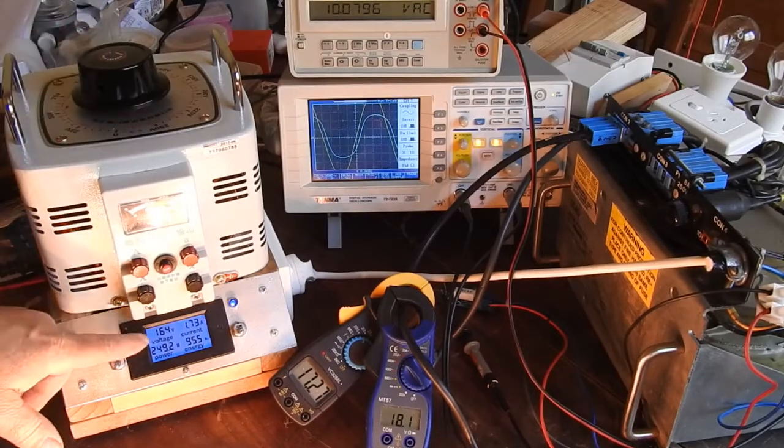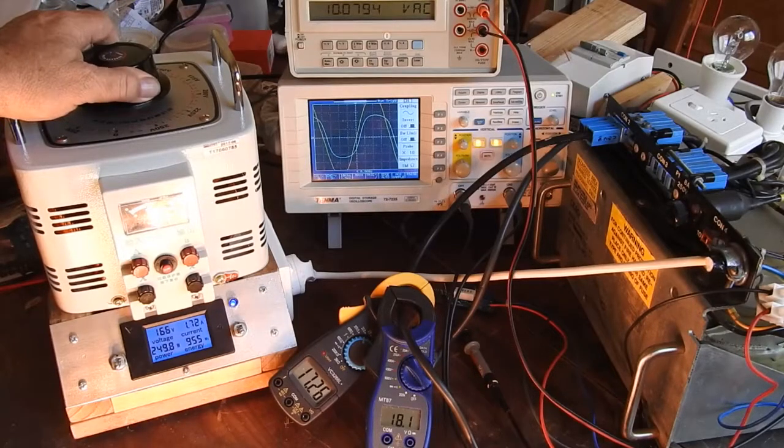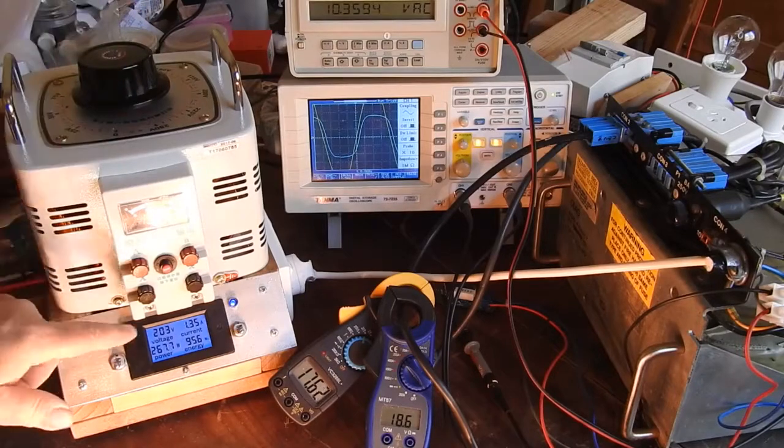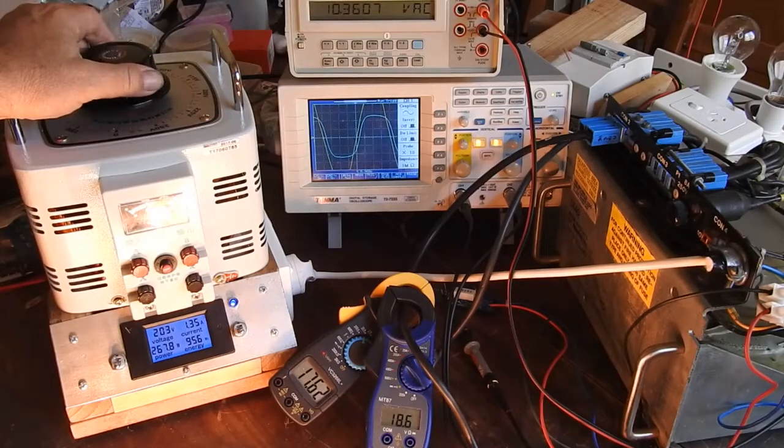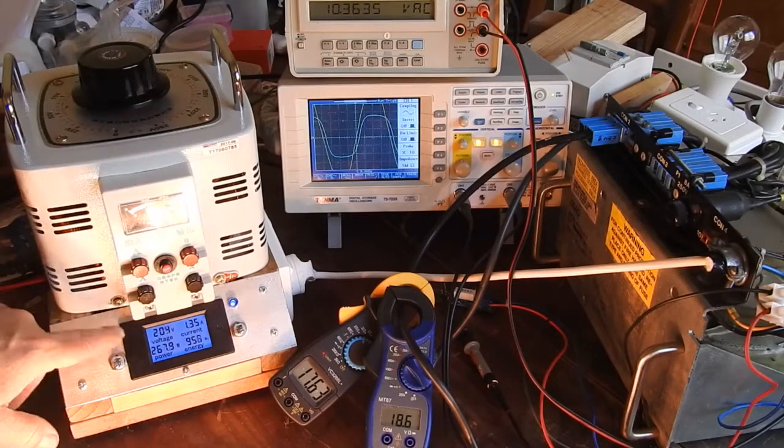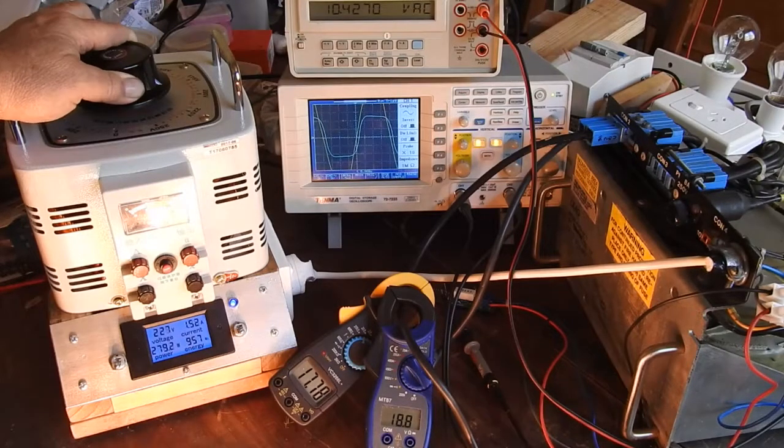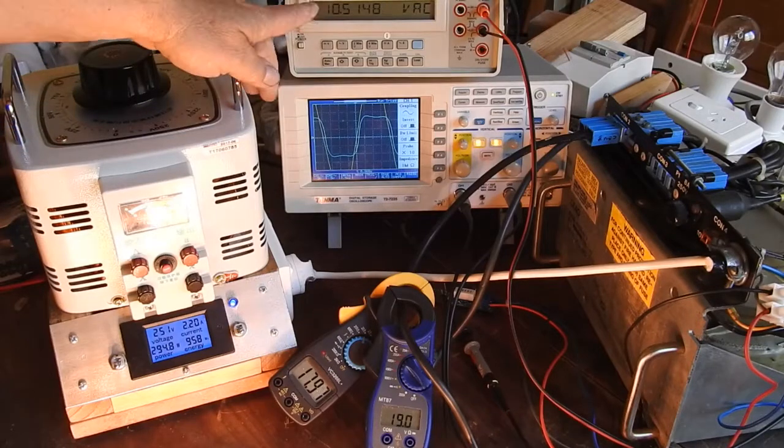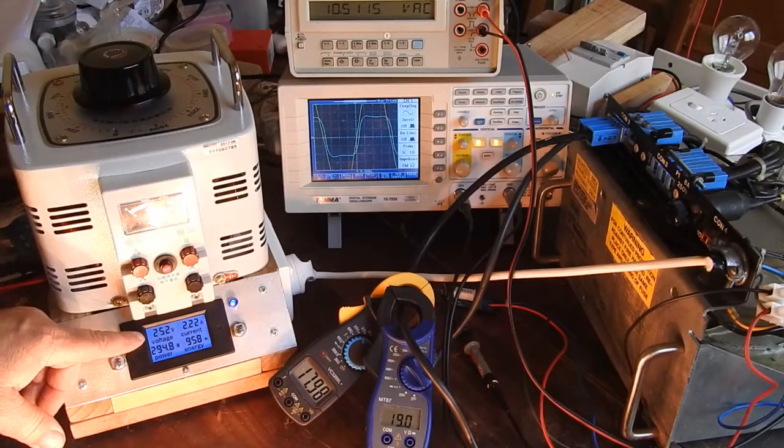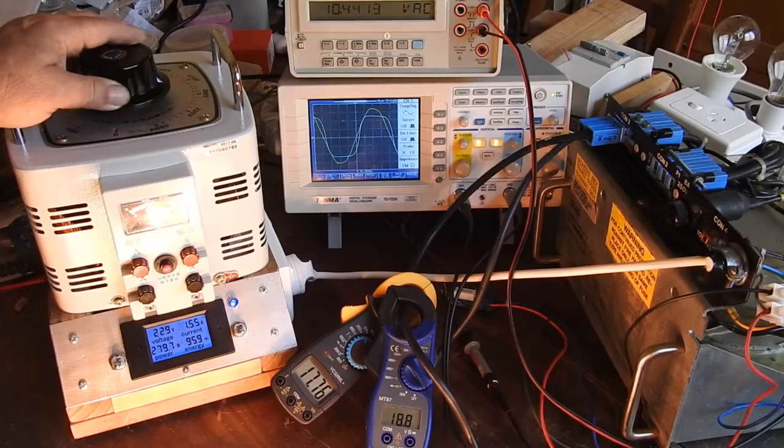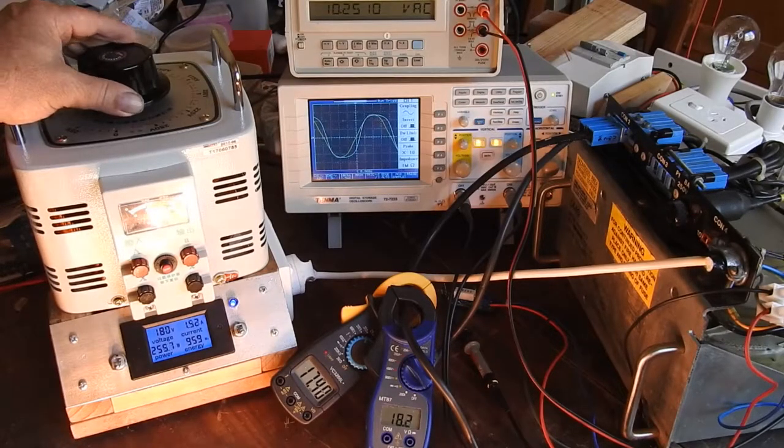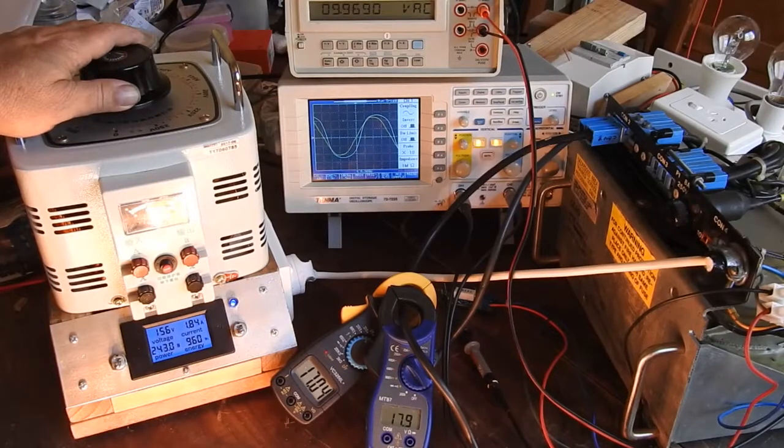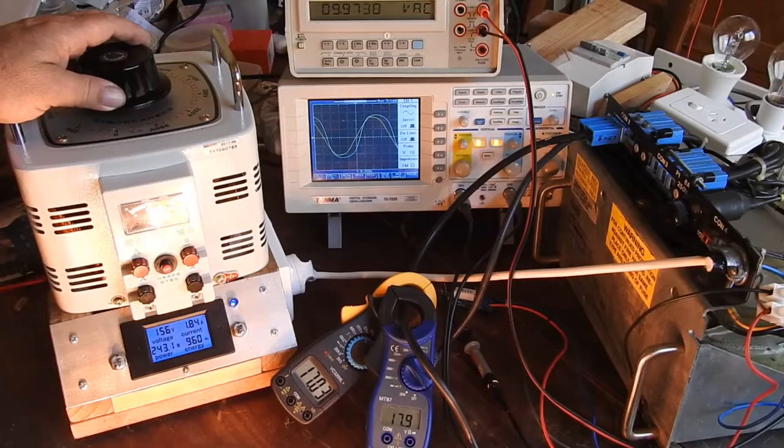Now we're at 10 volts output with 164 volts input. 200 volts input, 10.3 volts output, so the output voltage has only just gone up a little bit while we've moved this up like 40 volts. All the way to 250 volts, 10 and a half. That's barely budged from 160 volts to 250 volts. It is indeed a constant voltage transformer.